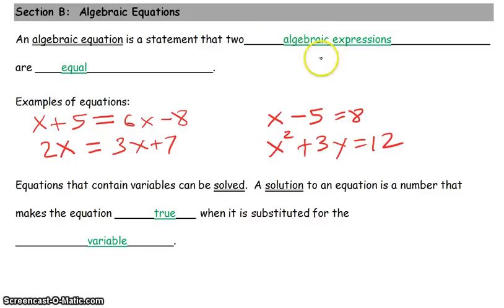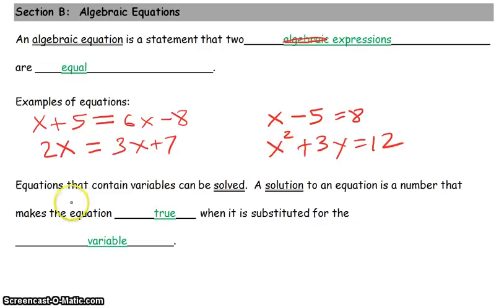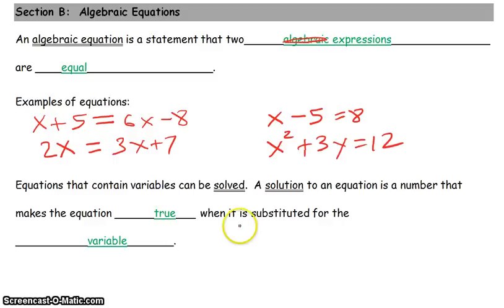In most cases at this level you will deal with two algebraic expressions being equal. The actual definition just says expressions — not necessarily algebraic expressions — because here 8 by itself is not an algebraic expression. Equations that contain variables can be solved. A solution is a number that makes the equation true when substituted for the variable. For example, if x equals 7, substituting 7 back in should make the equation true.